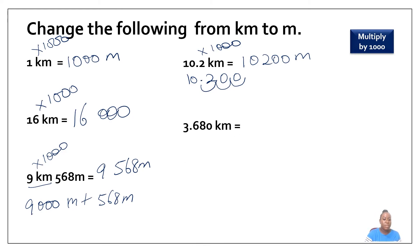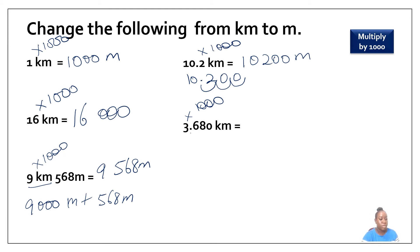We have three point six eight zero kilometers and we like to change it to meters, so we need to multiply by one thousand. I am going to shift my decimal point three times to the right — one, two, three — so my new number is going to be three thousand six hundred and eighty meters.